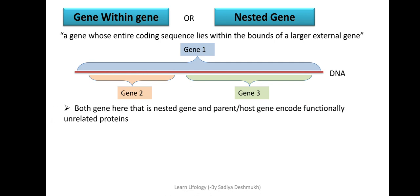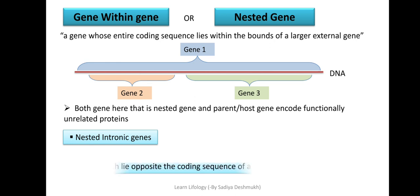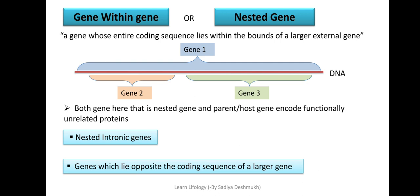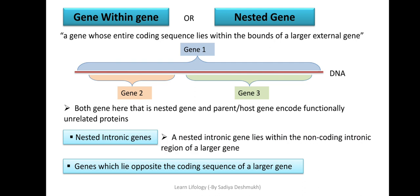Both the nested gene and the parent (host) gene encode functionally unrelated proteins — the proteins they produce are not related to each other. There are two types of nested genes: nested intronic genes, where the nested gene is present within the intron sequence of the larger gene, and genes which lie opposite the coding sequence of the larger gene. The nested intronic gene lies within the non-coding or intronic region of the larger gene.